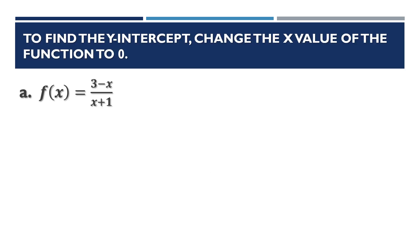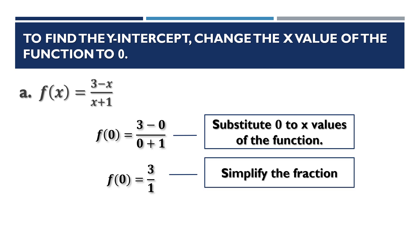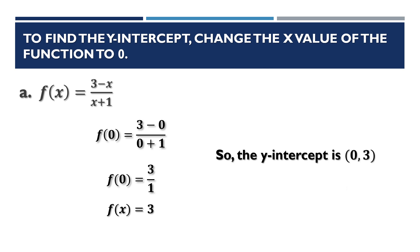To find the y-intercept, change the x-value to 0. So f(0) = (3 minus 0) over (0 + 1) = 3 over 1 = 3. Therefore, the y-intercept is at (0, 3).